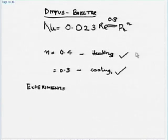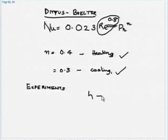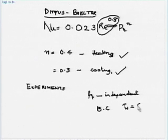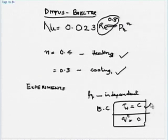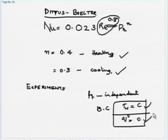An important point for turbulent flows: the heat transfer coefficient is independent of boundary condition. Whether constant wall temperature or constant heat flux, you get the same Nusselt number. Because turbulence is so random and there is so much mixing, the flow does not 'know' the boundary condition. Experimental measurements of h for both cases match within experimental uncertainty.